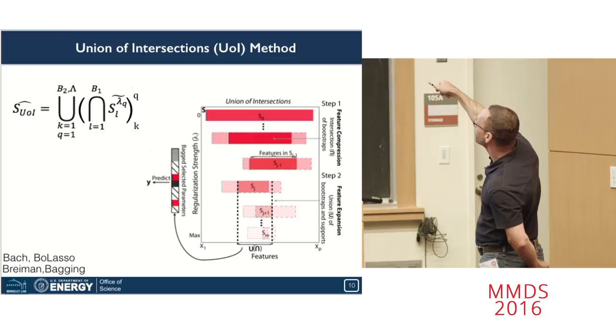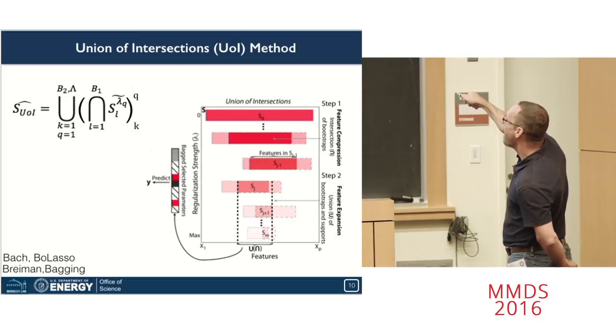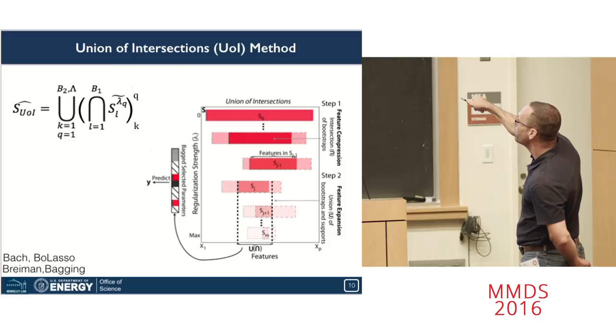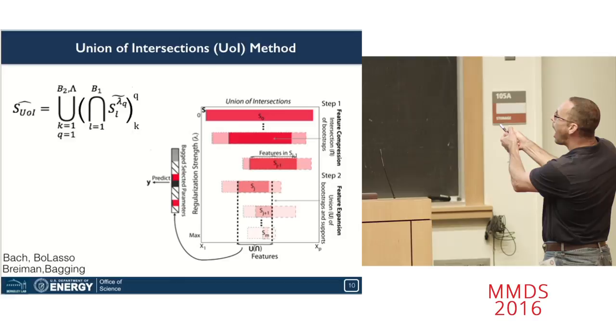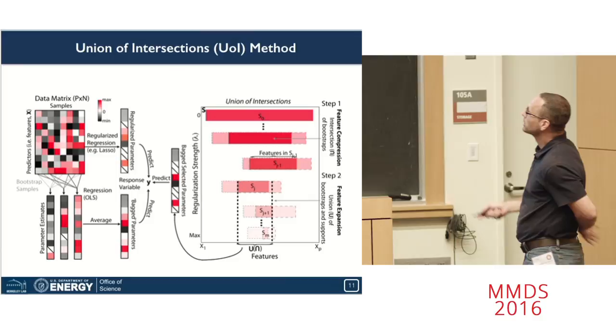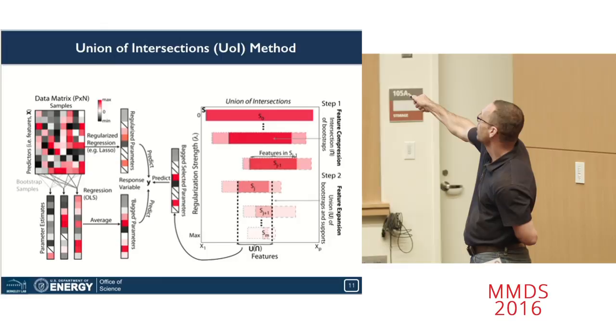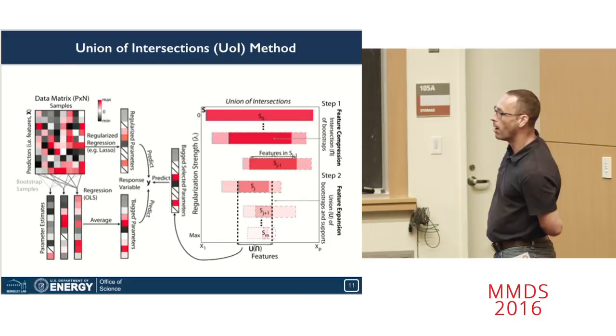In the second step, we kind of take a union or bagging operation where we take an average of estimates both across bootstrap samples and different models of supports. And in this estimation procedure, we are including model supports so as to explicitly maximize our prediction accuracy across our data. The important key thing here is that the support after all these operations is essentially given by a union of intersections, hence the name. As I mentioned before, what we can essentially do is by balancing feature compression and feature expansion, which I would say we are only using convex, solid convex authorizations here, we are able to counteract the weaknesses of either one of these methods that is done individually.